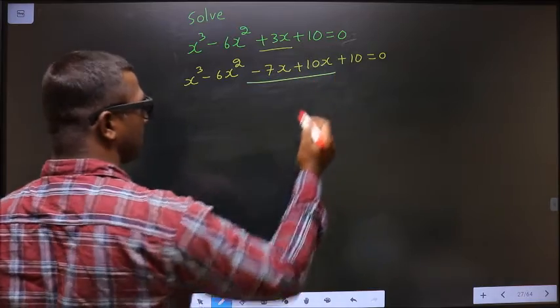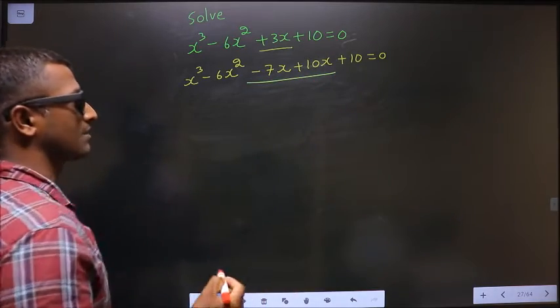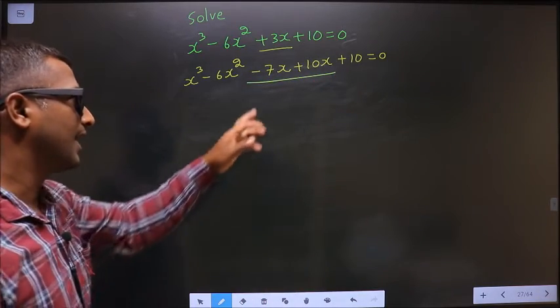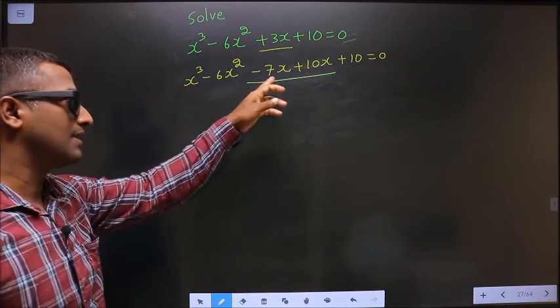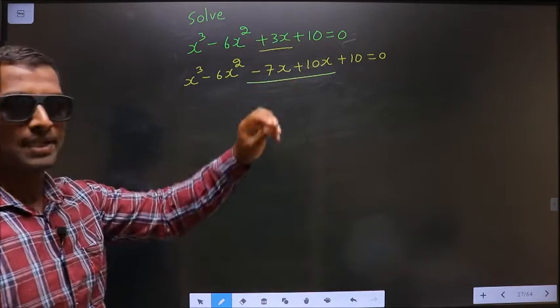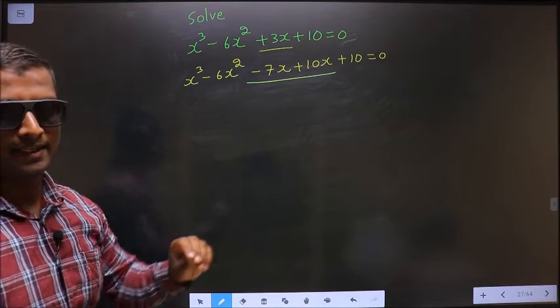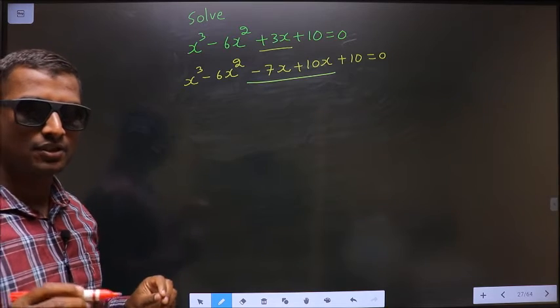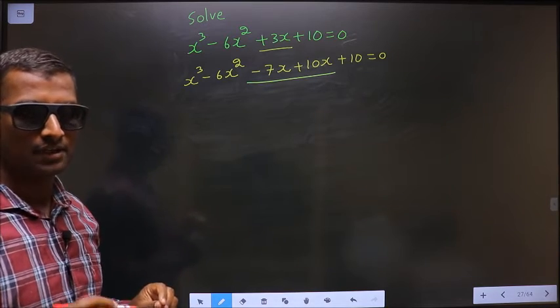In place of plus 3x, I have written minus 7x plus 10x. That is your step 1.